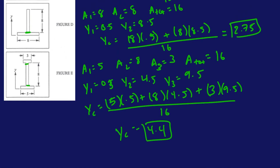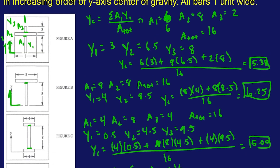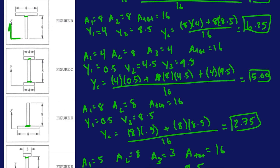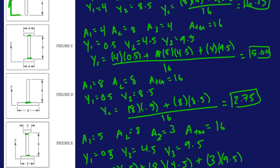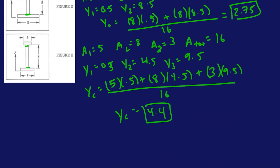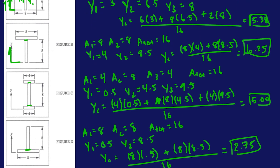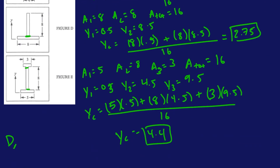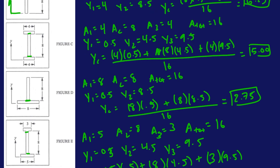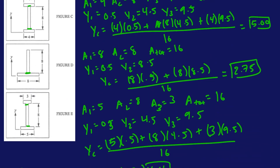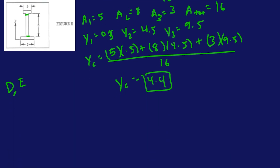Now, since we got all the centroids — assuming we did these correctly — we can rank them in the correct order from least to greatest. 2.75 is the least, so that's D. Next lowest is 4.4, that's E. Then C is 5. Then A. Then B. So the order from least to greatest is D, E, C, A, B.